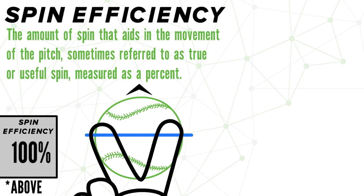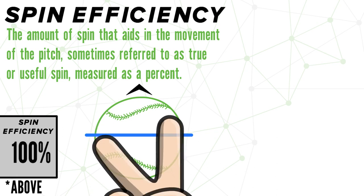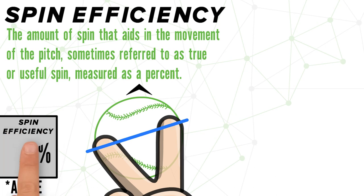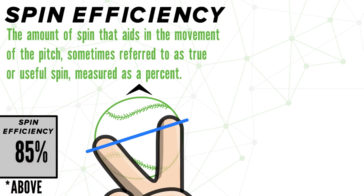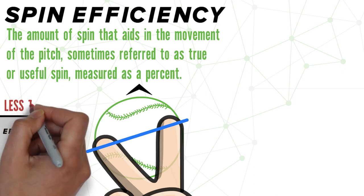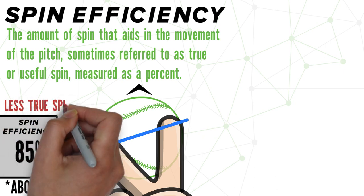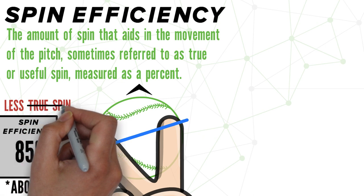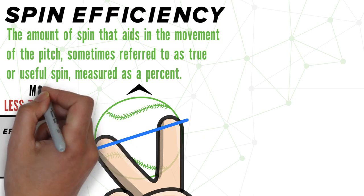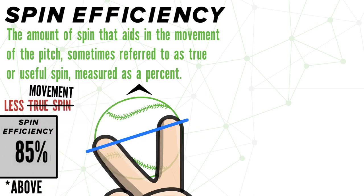Now picture that same pitcher releasing a pitch from slightly around the baseball, causing our spin axis to alter. Because that axis is no longer aligned perfectly with the direction the ball is traveling, we will get a lower spin efficiency score. The lower your spin efficiency is, the less true spin you will be putting on the ball, which means you'll be limiting the amount of movement your pitches will have as you stray away from that 100% mark.